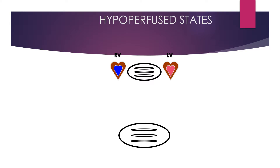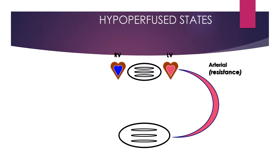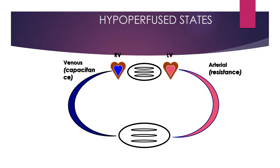In a hypoperfused state, there is arterial resistance between the left ventricle and the body, and there is venous capacitance between the blood vessels of the body and the right ventricle. The venous capacitance leads to end-diastolic volume, and systemic vascular resistance as well as pulmonary vascular resistance are key determinants.